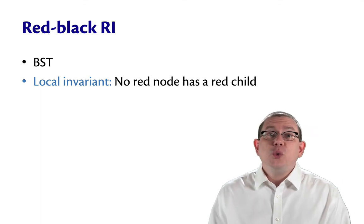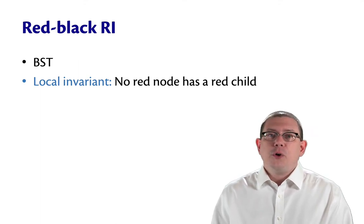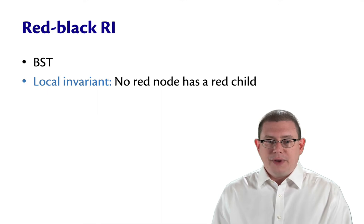The rep invariant for a red-black tree is one of the most important things to know about it. First off, the rep invariant requires that the tree is a BST. So, the BST invariant is part of the red-black invariant. Then, there's two other pieces.